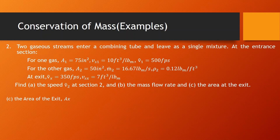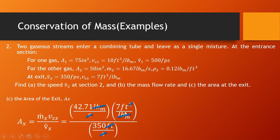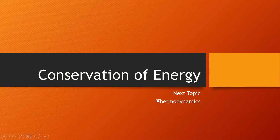Finally, solve for the area at the exit. Using the formula, mass flow rate = 42.71 lb-mass/s times specific volume at exit = 7 ft³/lb-mass, divided by average speed at exit = 350 ft/s. Canceling pound-mass, seconds, and one degree of feet, the result is 0.8542 feet squared. That concludes the conservation of mass topic. Our next topic will be the conservation of energy. For questions, comment on the discussion.